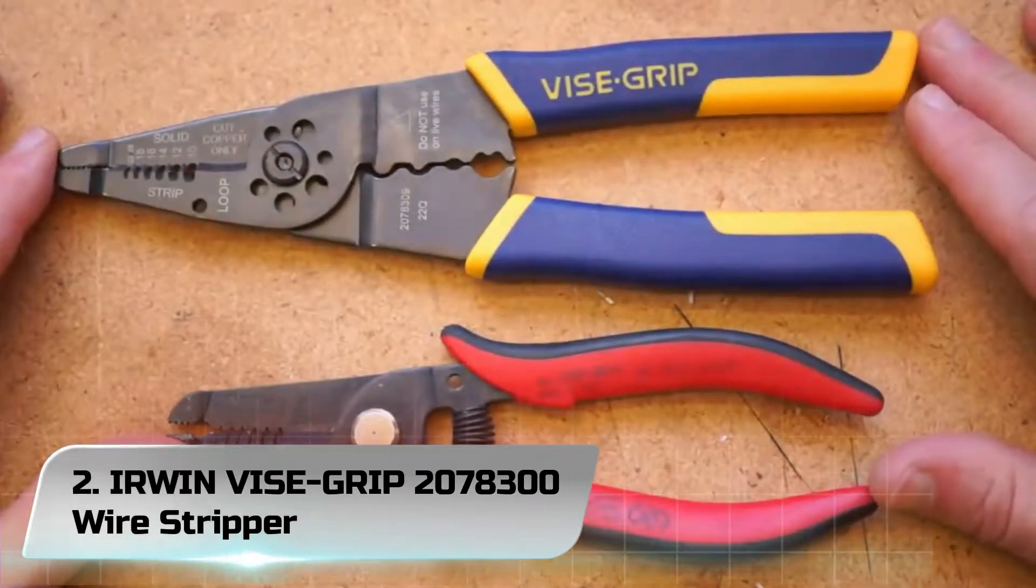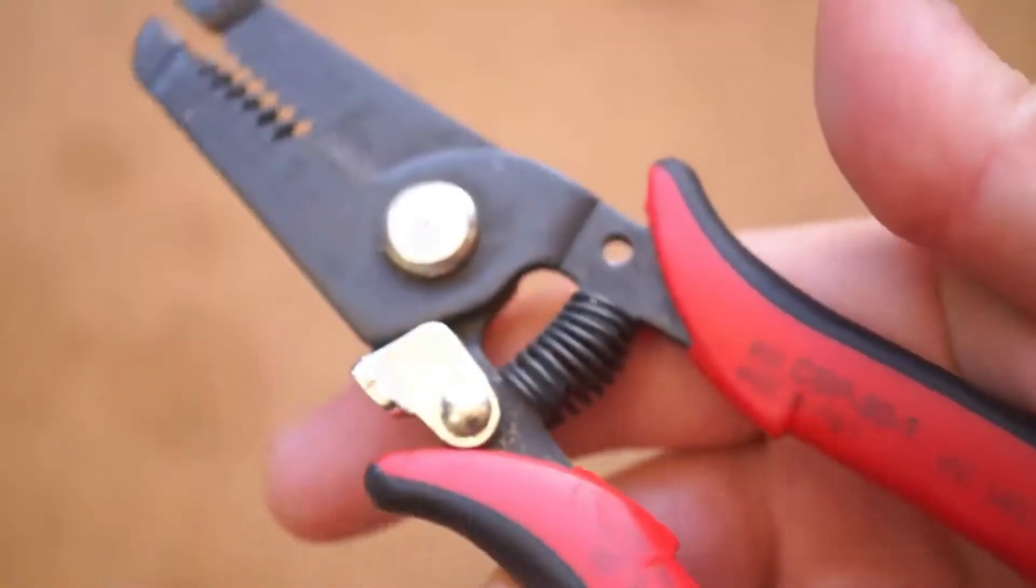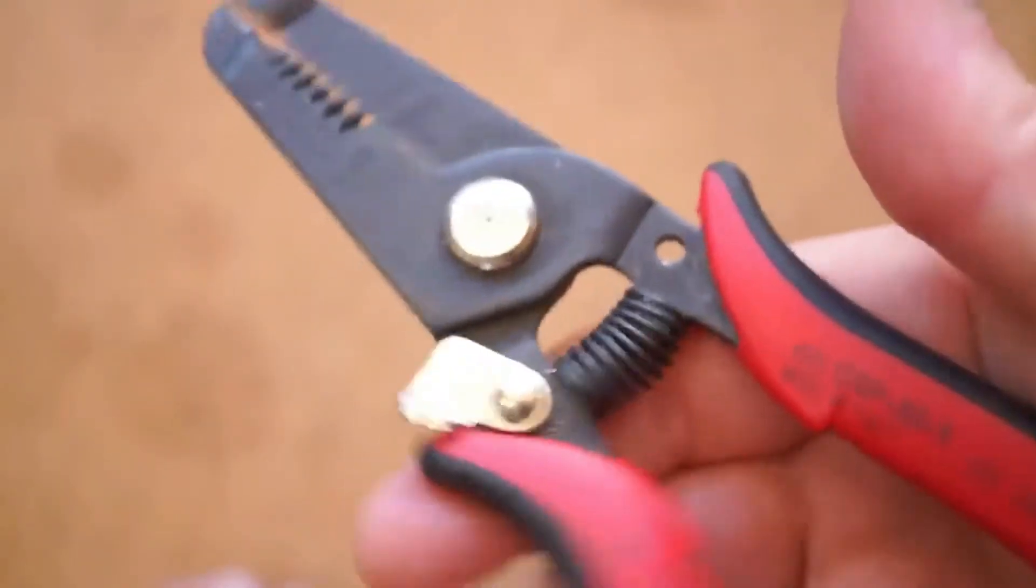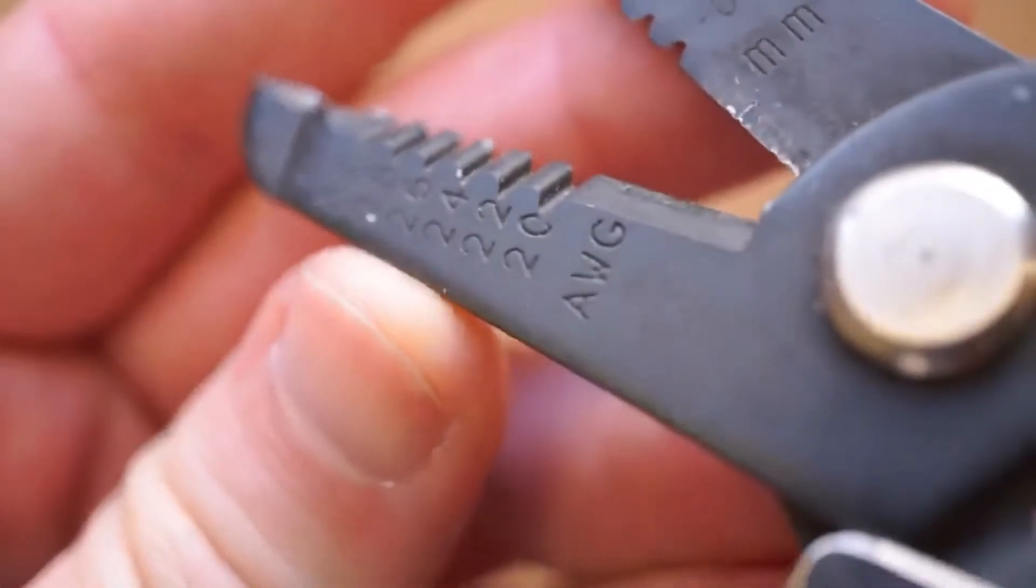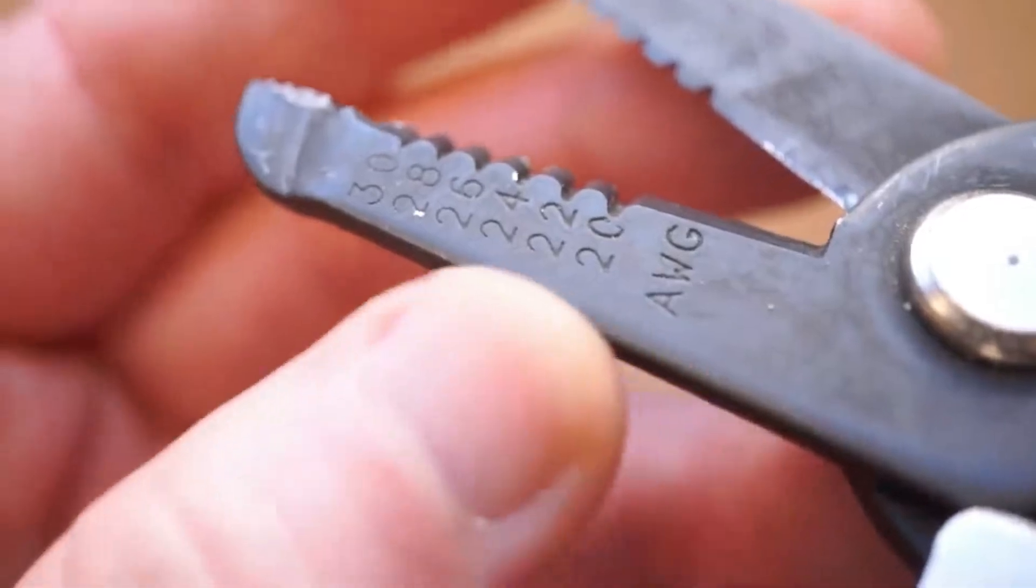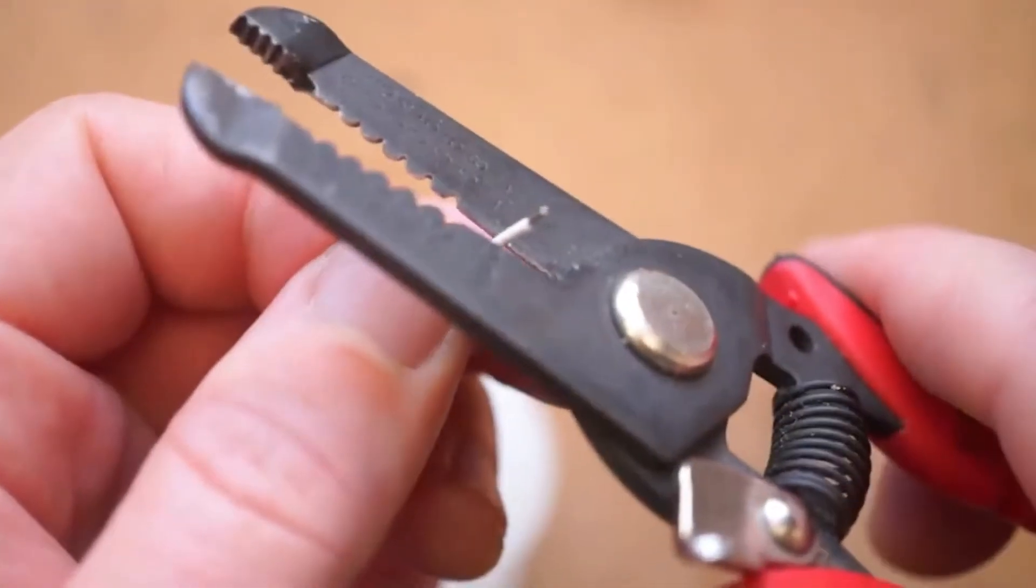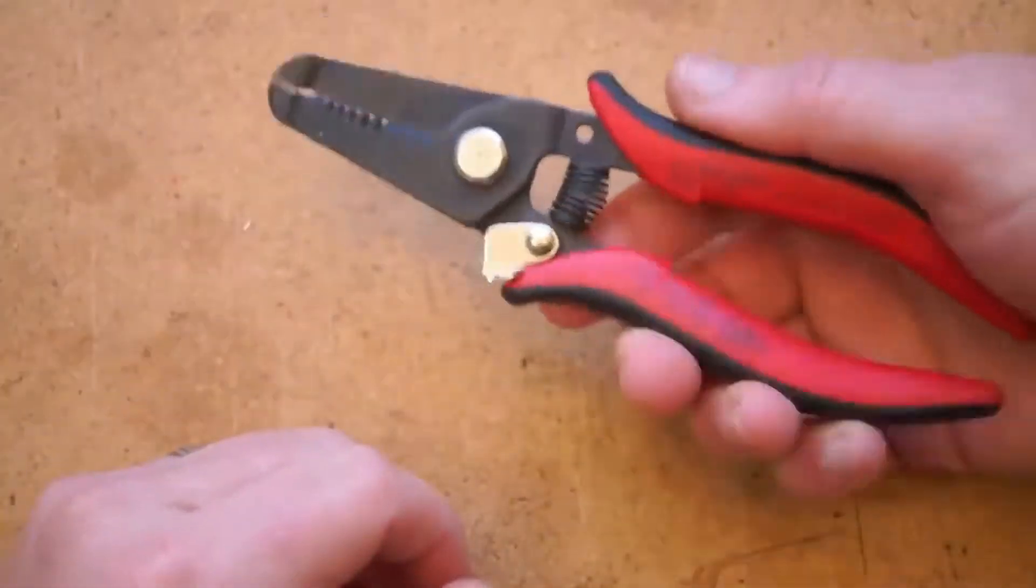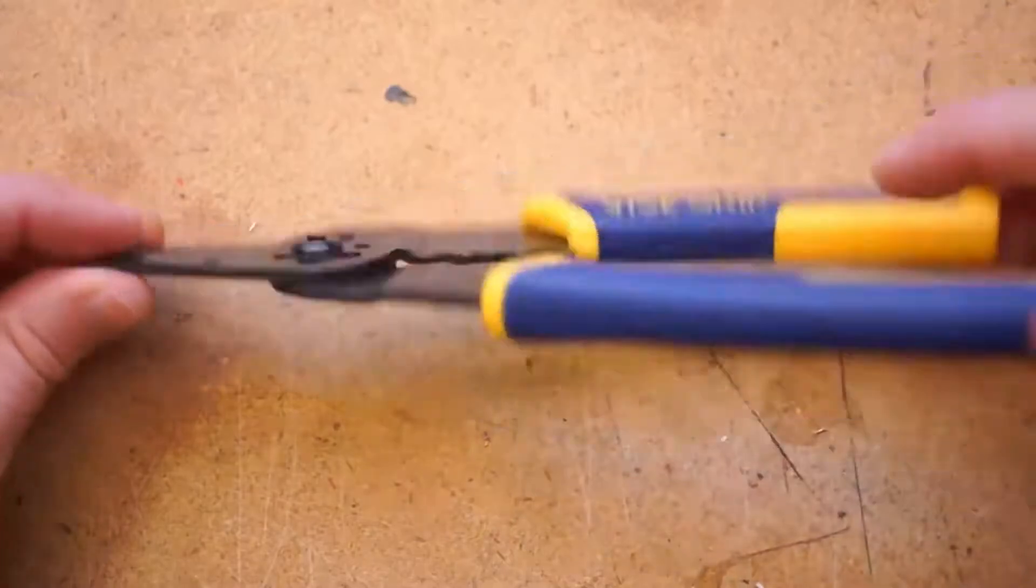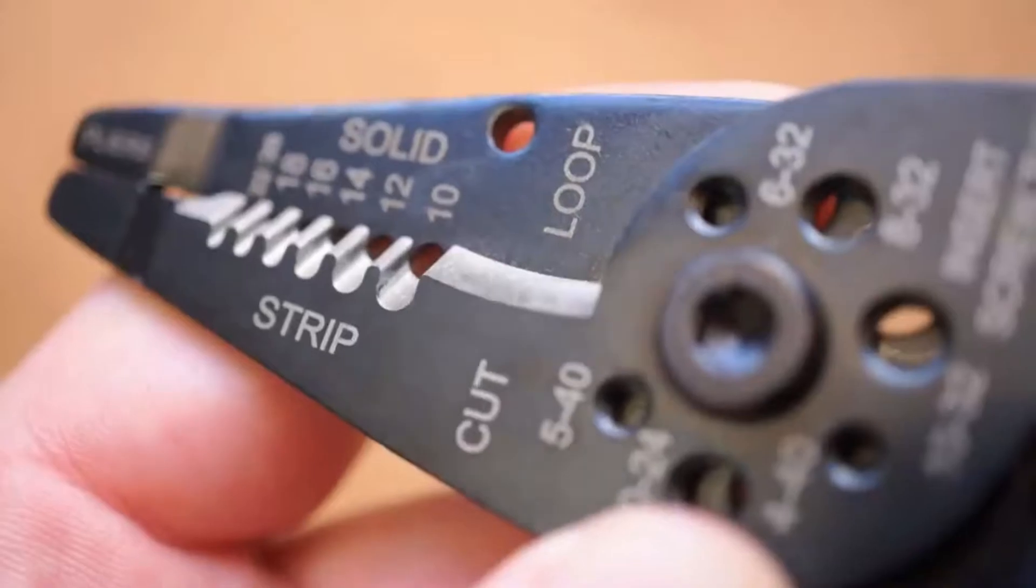Number 2. Erwin Vise Grip 2078,300 Self-Adjusting Wire Stripper. The second Erwin Vise Grip wire stripper on our list is the bulked-up big brother of our best choice. This tool is a self-adjusting wire stripper that accommodates wire gauges up to 20 AWG. It also has an integrated crimper that will crimp 10-22 non-insulated wire, 22 AWG insulated wire, and terminals from 7-9mm.